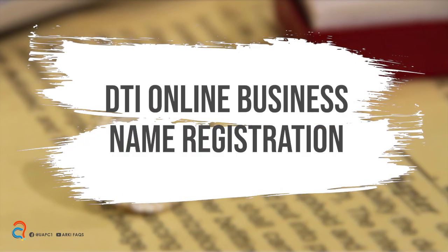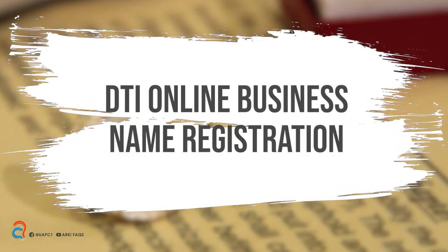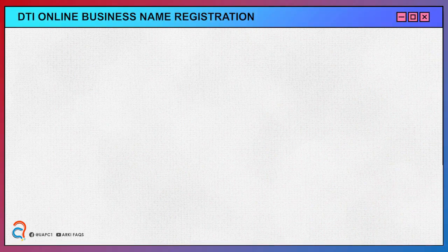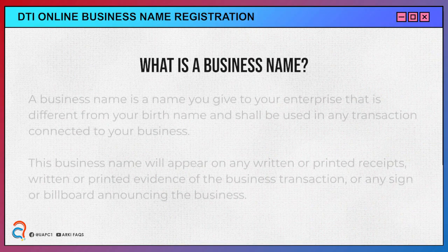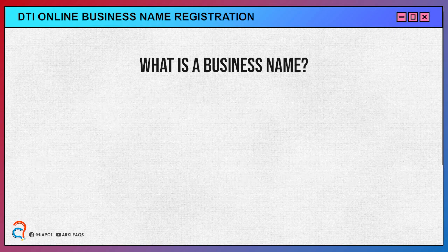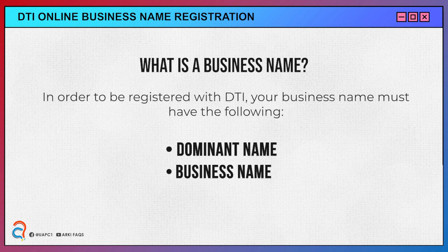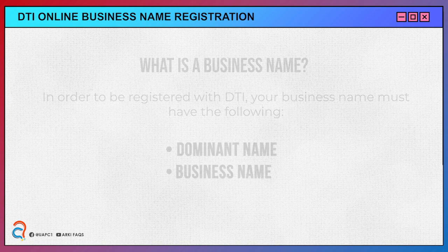The DTI online business registration. First of all, what is a business name? It is a name you give to your enterprise and shall be used in any transaction connected to your business. In order to be registered with DTI, your business name must have a dominant name and a business name.